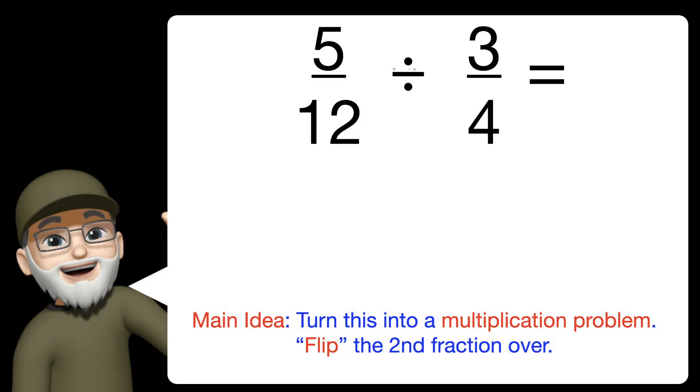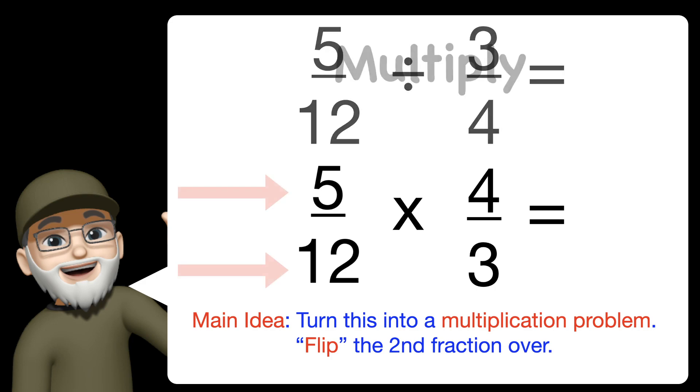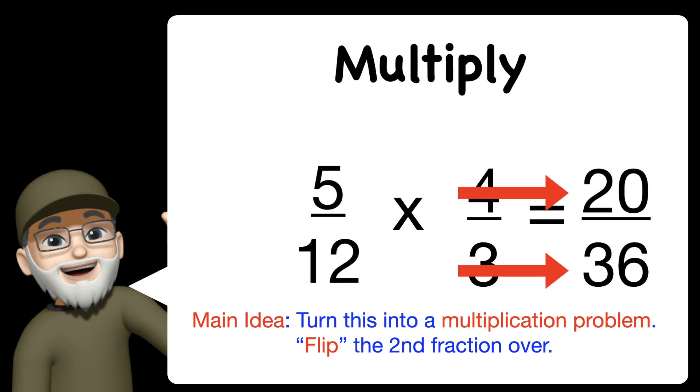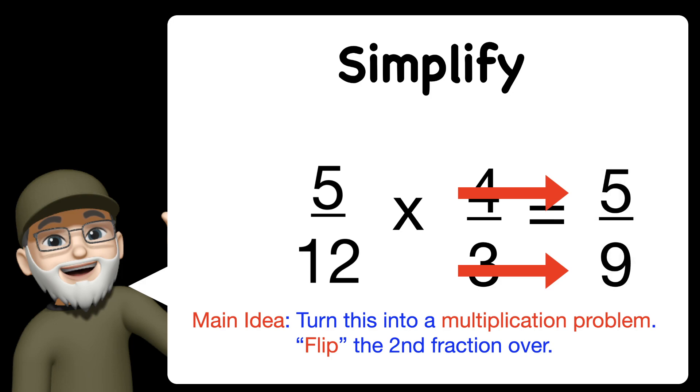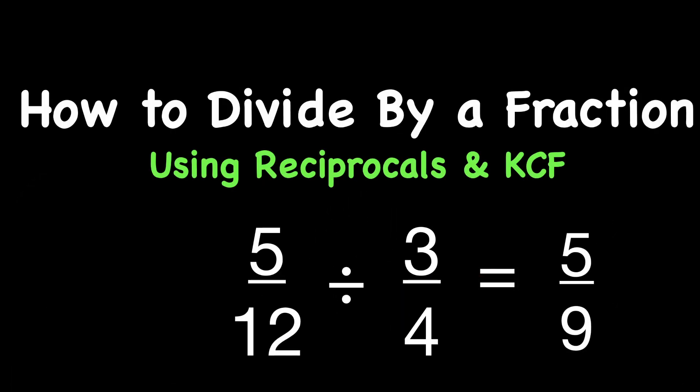The main idea for this type of lesson is that we want to turn this into a multiplication problem. Then we take the second fraction and flip it over into the reciprocal. Then you just multiply the first by the second fractions. If you multiply straight across, then you simplify for your final answer, in this case, of 5 ninths.